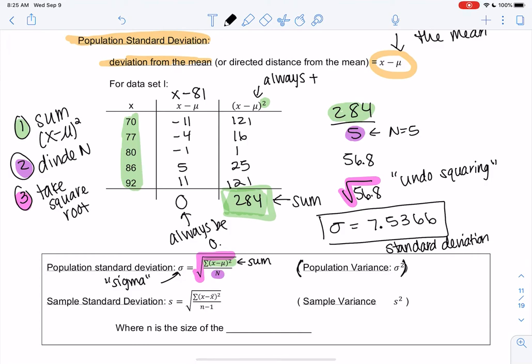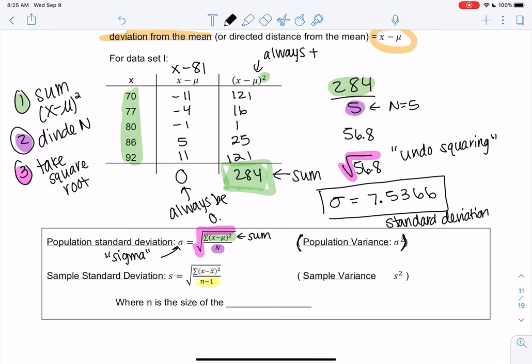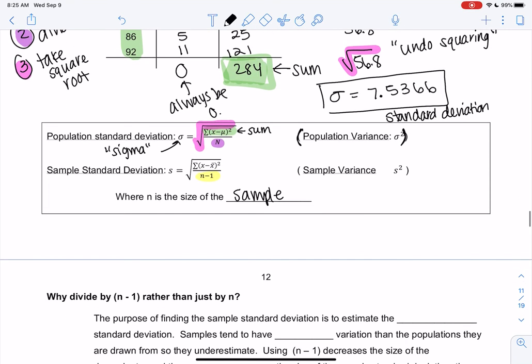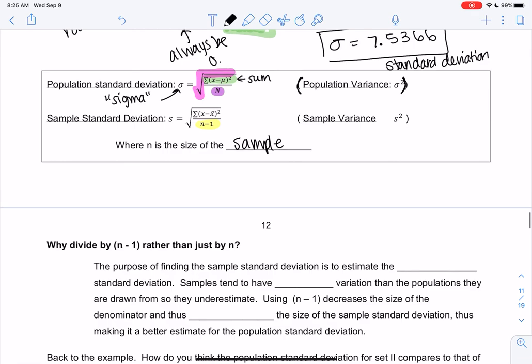And then the only difference with the sample is you divide by n minus 1, which I'll talk about in a second. And n is just the size of the sample. So let's talk about why n minus 1, and then we'll save the rest for another video because this video is getting a little long. So why are we dividing by n minus 1 rather than n for the sample? And for sample, we're going to use s rather than sigma.